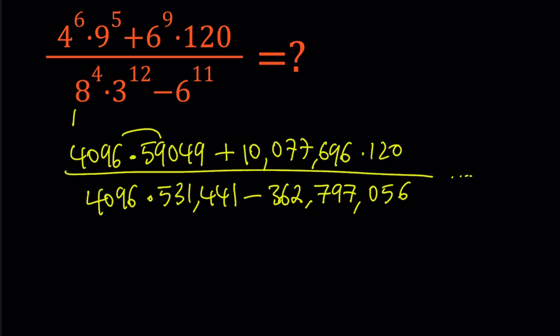Here's the point. We're going to use prime factorization. That is the key. So, for example, 4 can be written as 2 to the 2nd power, so this becomes 2 to the power of 12th. 9 is 3 to the 2nd power, so 9 to the 5th can be written as 3 to the power of 10th. 6 can be broken down into 2 times 3, so we can write it as 2 to the 9th, 3 to the 9th.